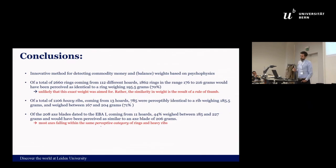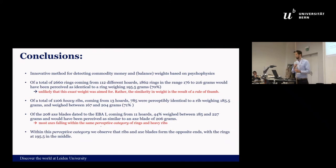The axe blades, a good amount of them are perceived as similar to the rings and the ribs, and we call this a perceptive category. Within this perceptive category you observe that they form the opposite ends, so you have the ring in the middle, and basically the ribs and the axe blades seem to be the opposite ends of that perceptive category. These are conclusions from the numbers themselves.